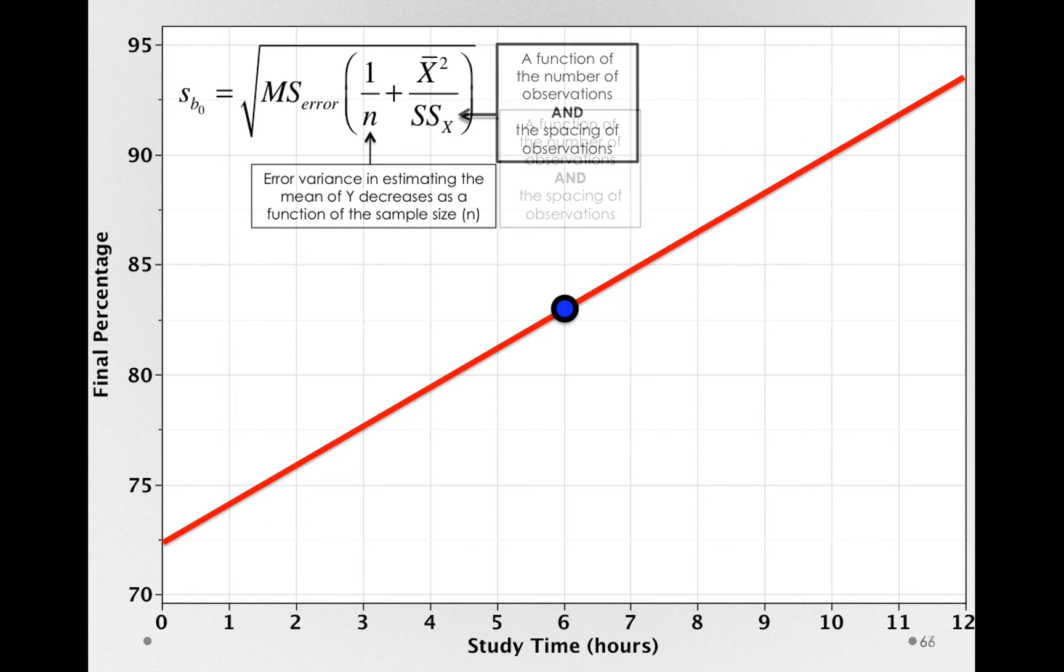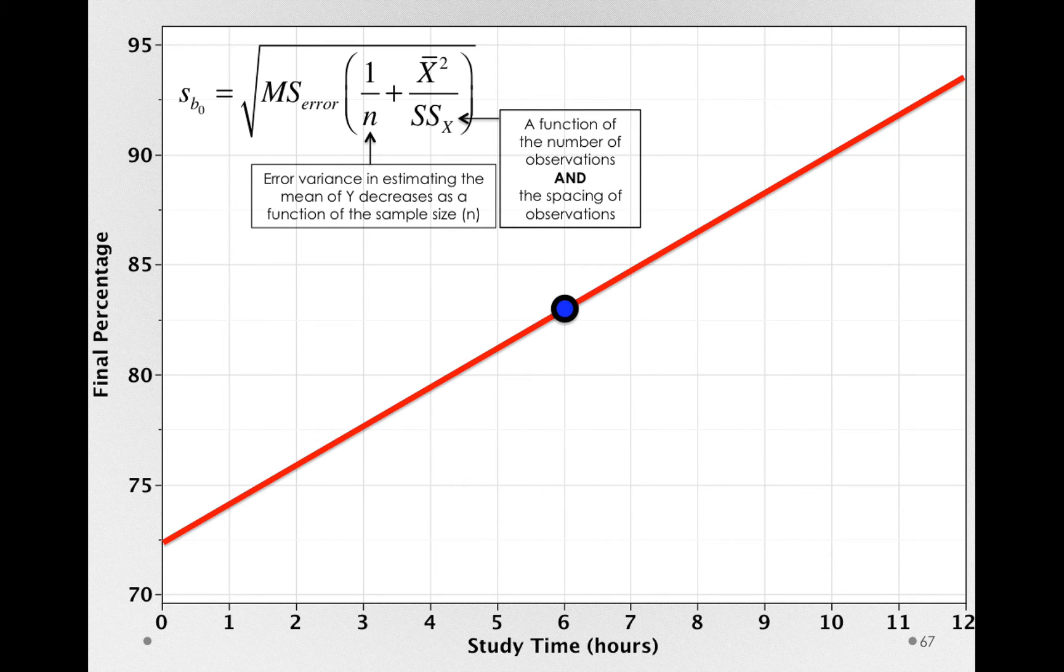Now, let me move that box down. And you may have noticed that in the numerator, right above the sums of squares for x, is x-bar squared. Now, of course, x-bar squared is just x-bar squared. But really, we can think about this as a function of how far 0 is from the mean of x. That is, literally what it means. Now, why should this have an effect? Notice that it's above the sums of squares for x. So in essence, it's going to scale how much of an influence our estimation of the slope really exerts on the error experienced by the intercept.